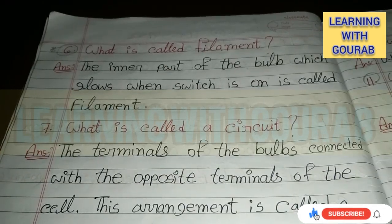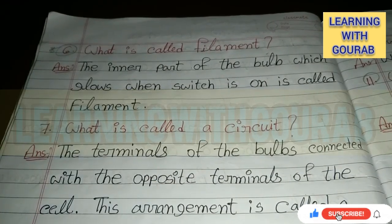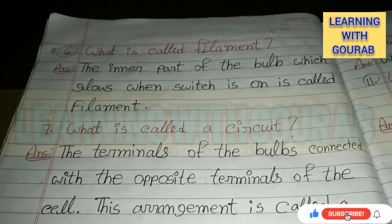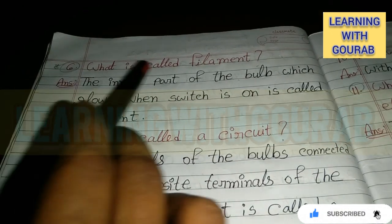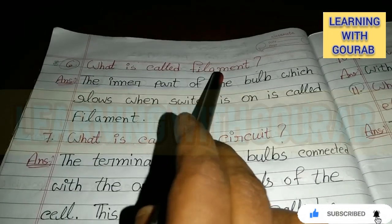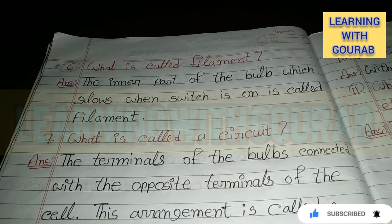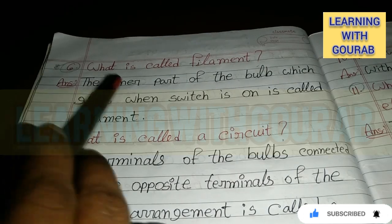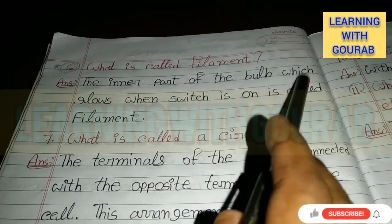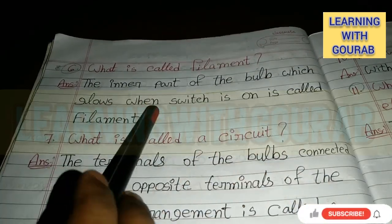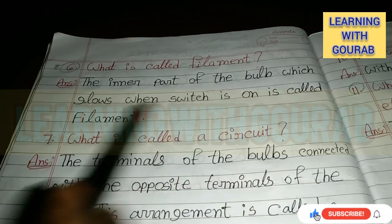Next question: What is called a filament? Answer: The inner part of the bulb which glows when the switch is on is called the filament.